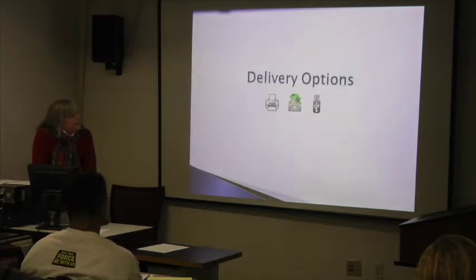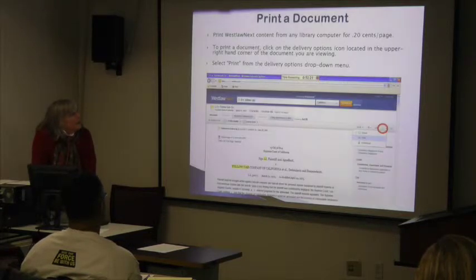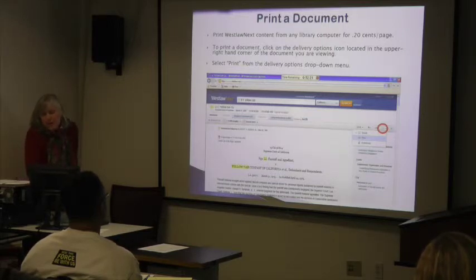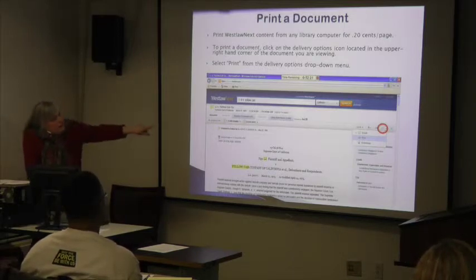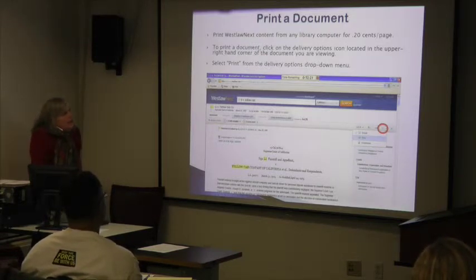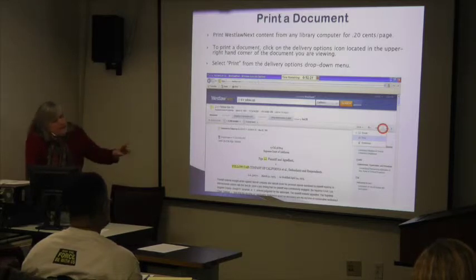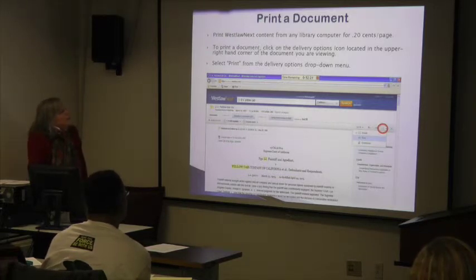Moving on to delivery options, which when combined with annotations can be incredibly valuable to users of the Alameda County Law Library. To print a document, WestlawNext content can be printed at the library for 20 cents a page. Click on the delivery option icon located in the upper right-hand corner of the document. Depending on the previous user, the icon may show a printer, email, or download option — that's where your delivery options are found.